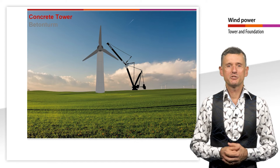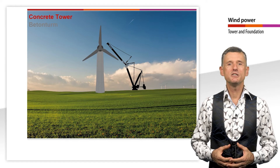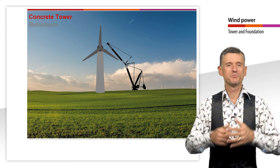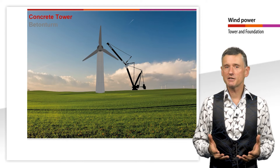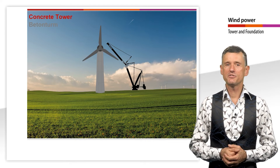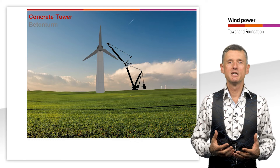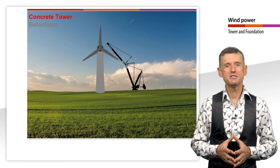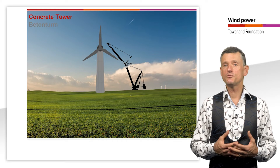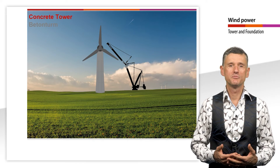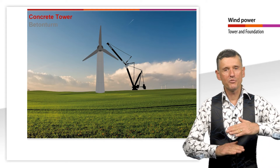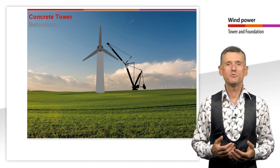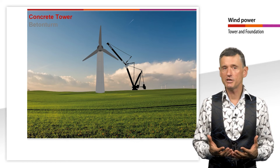Today, the prefabricated construction method is mainly used for hybrid towers, the upper part of which consists of a steel tube. As an alternative to the tube segments, a construction method with prefabricated longitudinal slabs has been used for some time. These longitudinal plates are very easy to transport and have no restrictions on the base diameter of the tower. The longitudinal slabs are a maximum of 10 meters long and about 3.5 meters wide. The tower is stiffened internally by tension cables.